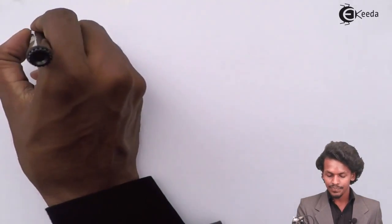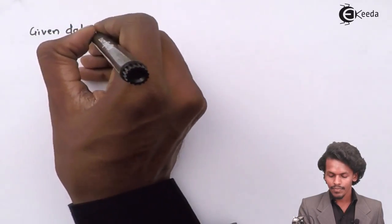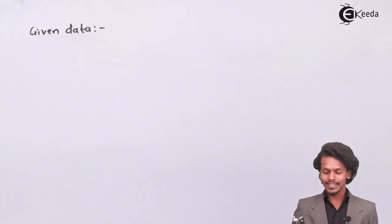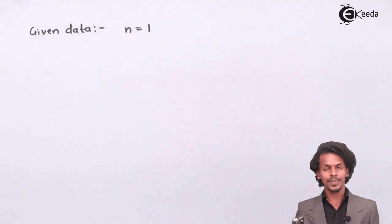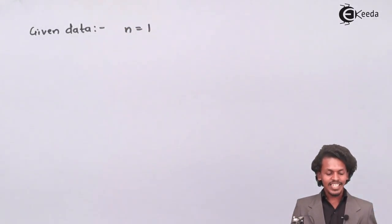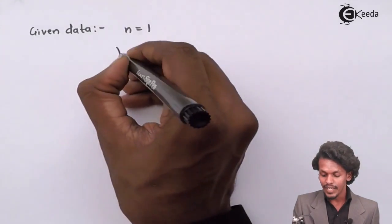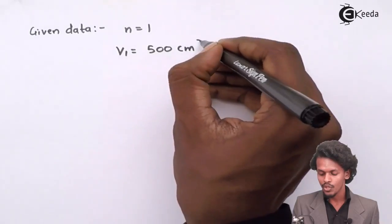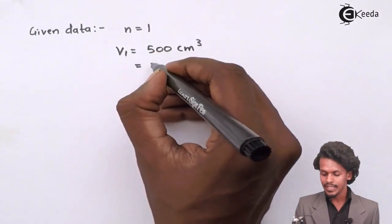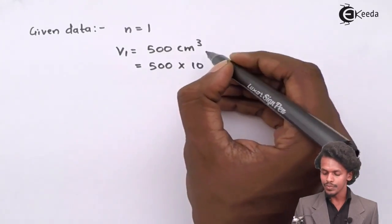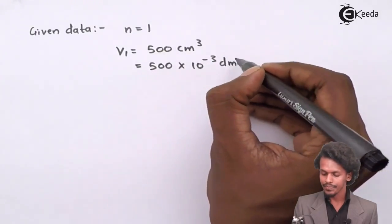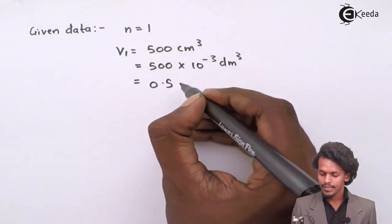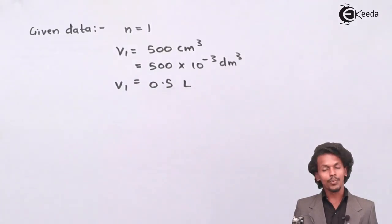The given data says that the number of moles of the ideal gas is n = 1, and the gas is being compressed from 500 cm³. That means the initial volume V₁ = 500 cm³, which can be converted to dm³ as 500×10⁻³ dm³, which equals 0.5 liter.